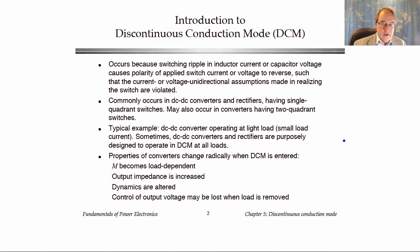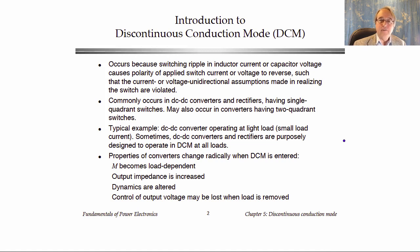The most traditional discontinuous mode operation occurs because the inductor current ripple is greater than the DC component of current, and this causes the current through the switches to try to reverse direction. The diode won't allow it — the diode will turn off instead — and we get a third period during the switching period, which changes the characteristics of the converter substantially.